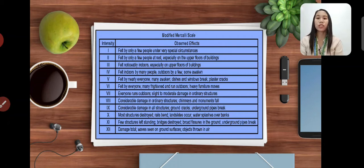Intensity 10, most structures destroyed and bent, landslides occur, water splashes, river banks. Intensity 11, few structures left standing, bridges destroyed, road fissures in the ground, underground pipes break. Intensity 12, damage total, waves seen on ground surfaces, objects thrown in air.